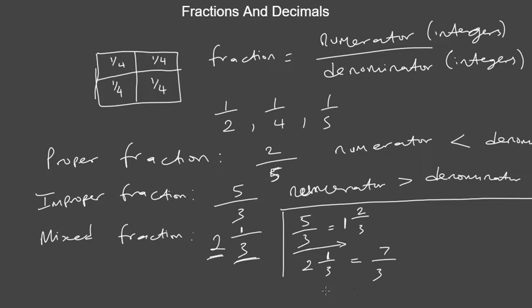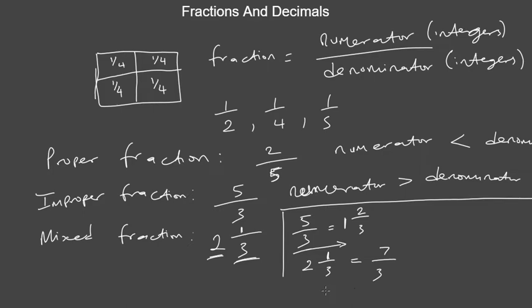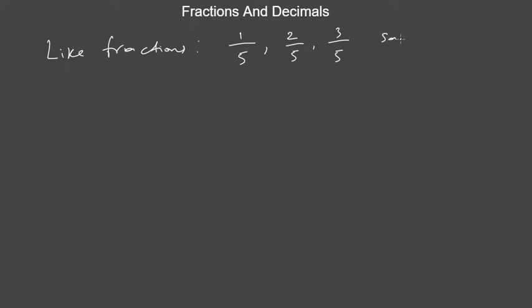We have another fraction known as like fractions. These are fractions with the same denominator. So if I have 1 over 5, 2 over 5, 3 over 5 — these are like fractions because they have the same denominator.